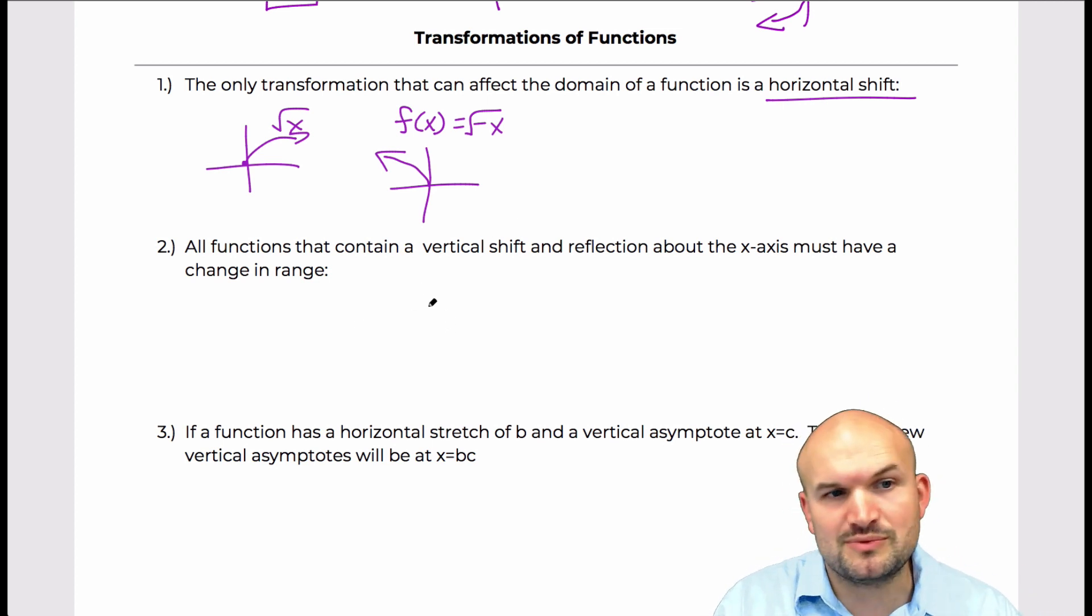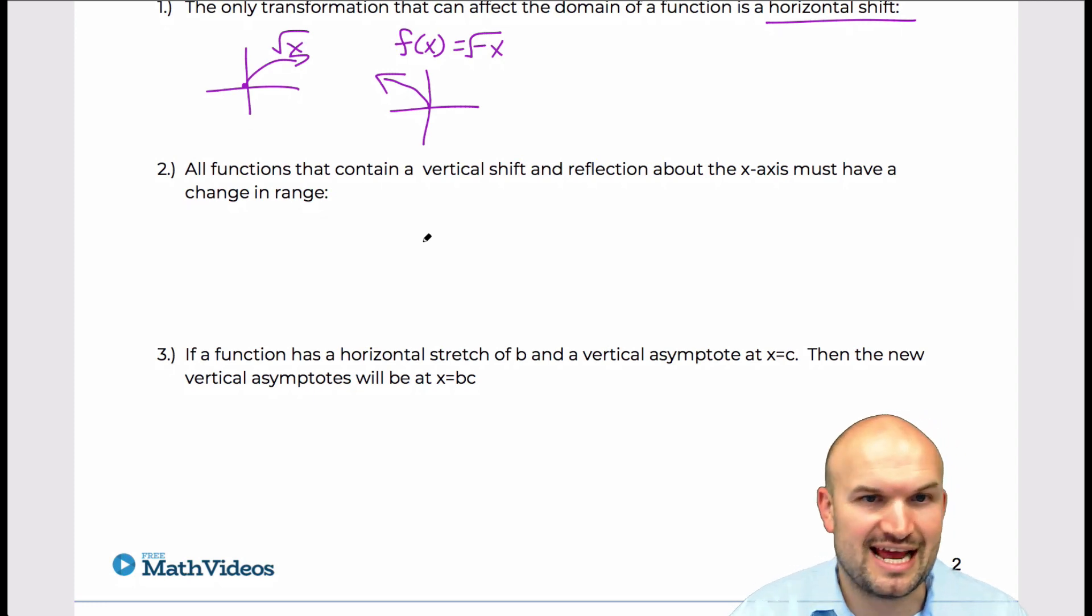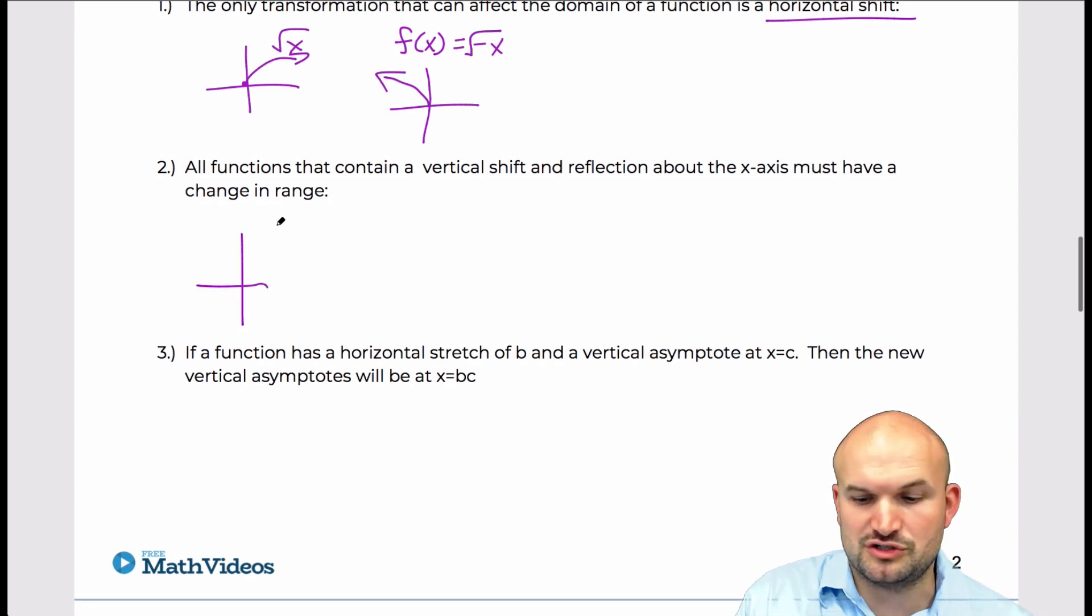All right, so on to the next one. The next one says, all functions that contain a vertical shift and reflection about the x-axis must have a change in the range. So again, this kind of comes into that exact same idea here. This function here is square root of x.